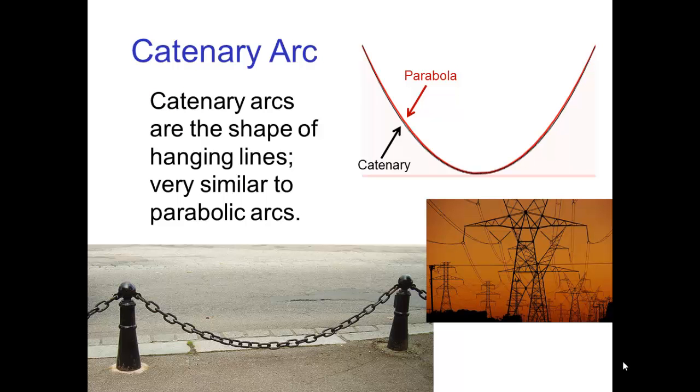Catenary arcs are very similar to parabolic arcs. The graph of a parabola, the red line, and a catenary, the black line, show that they almost overlap as curves. Catenary arcs are not a path of action, but they're common since they're the shape of hanging lines.